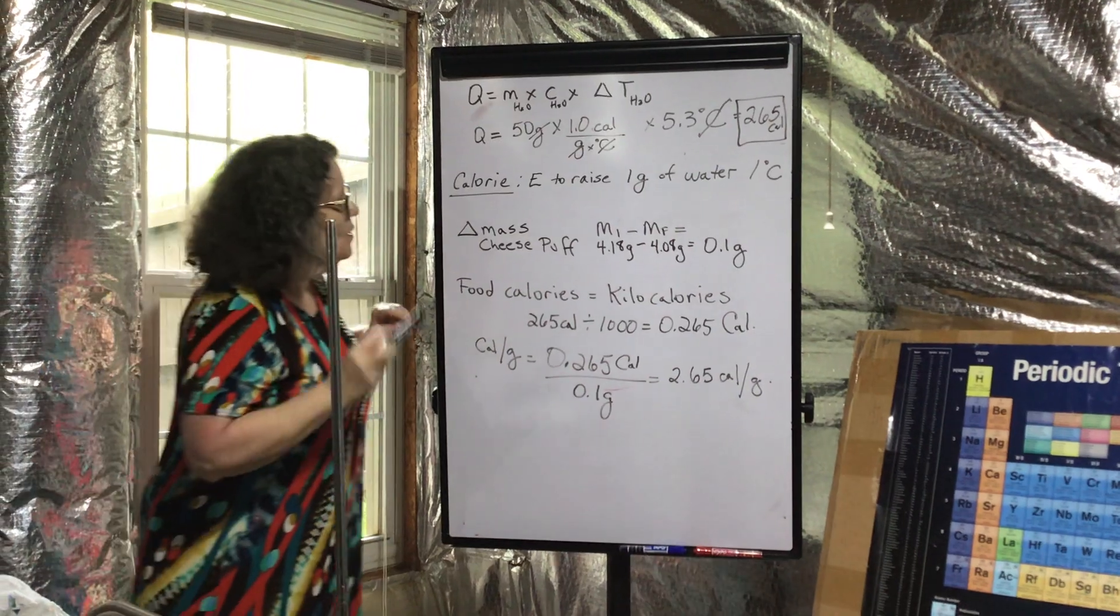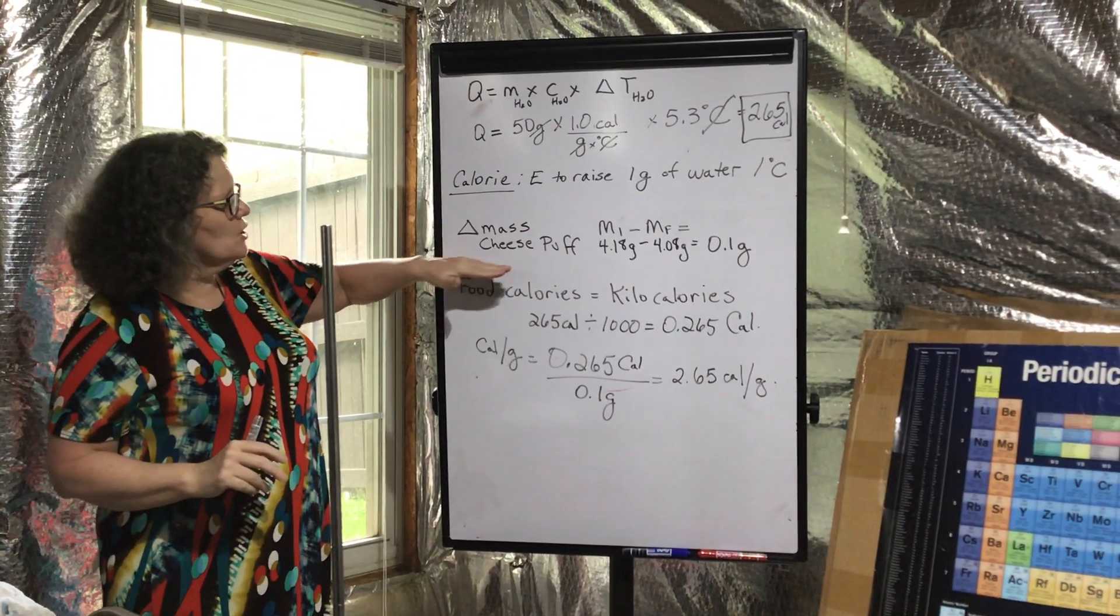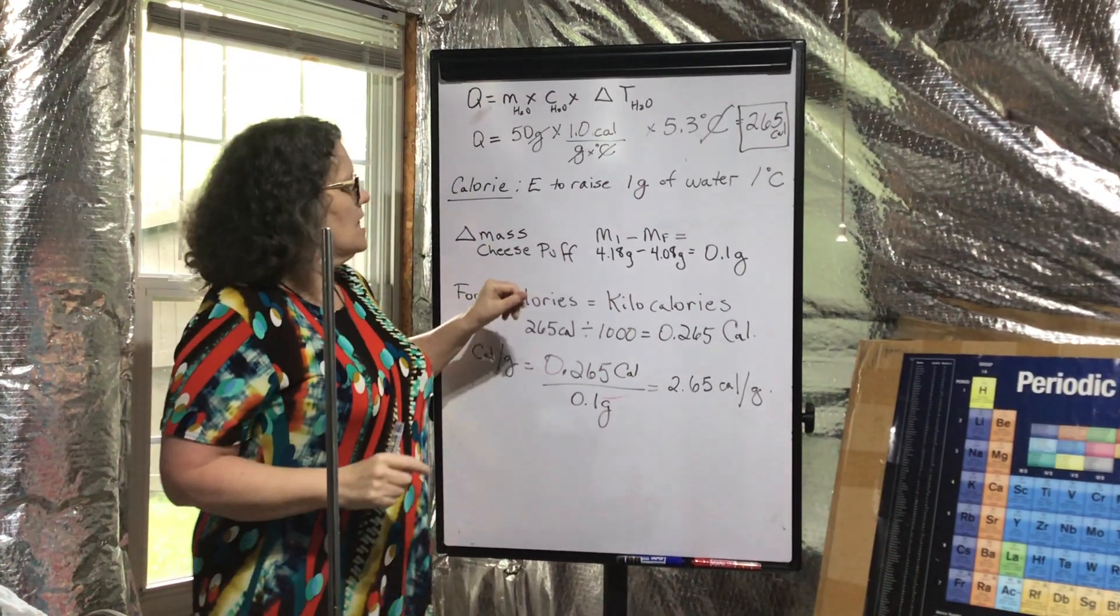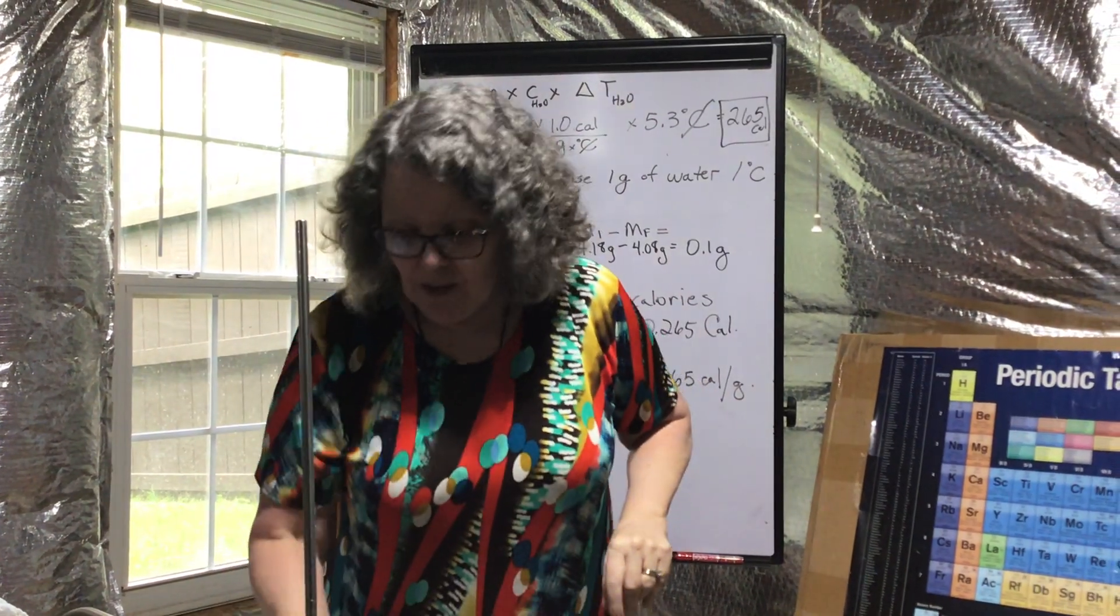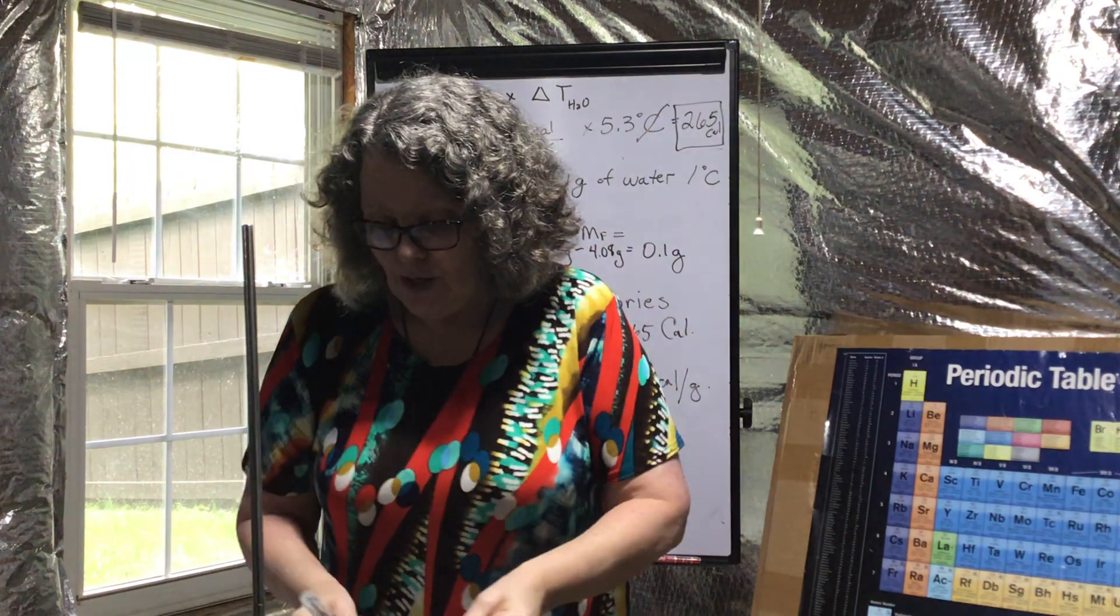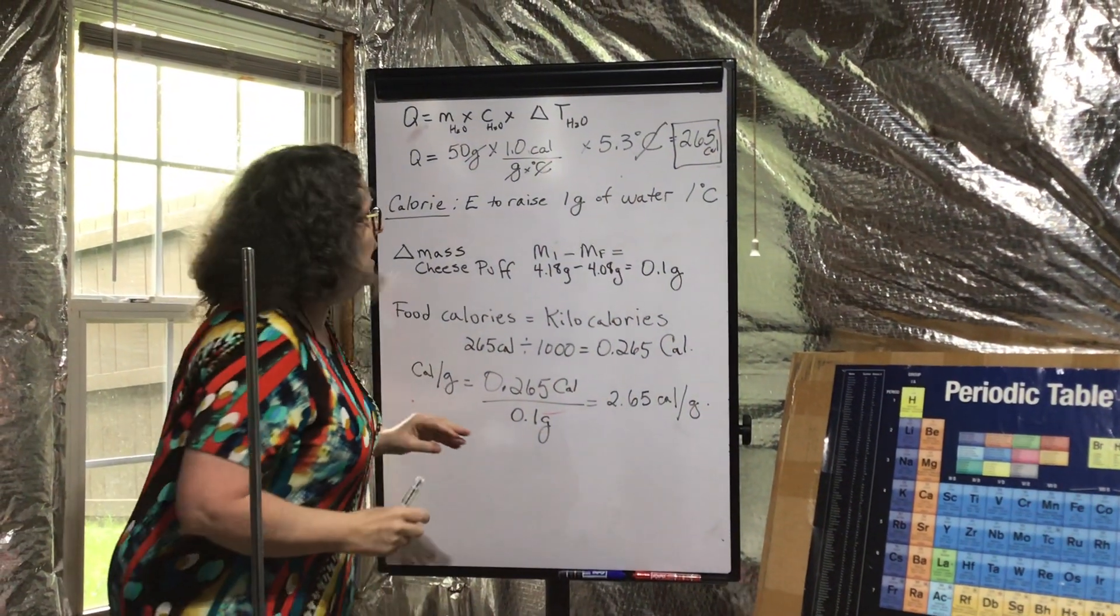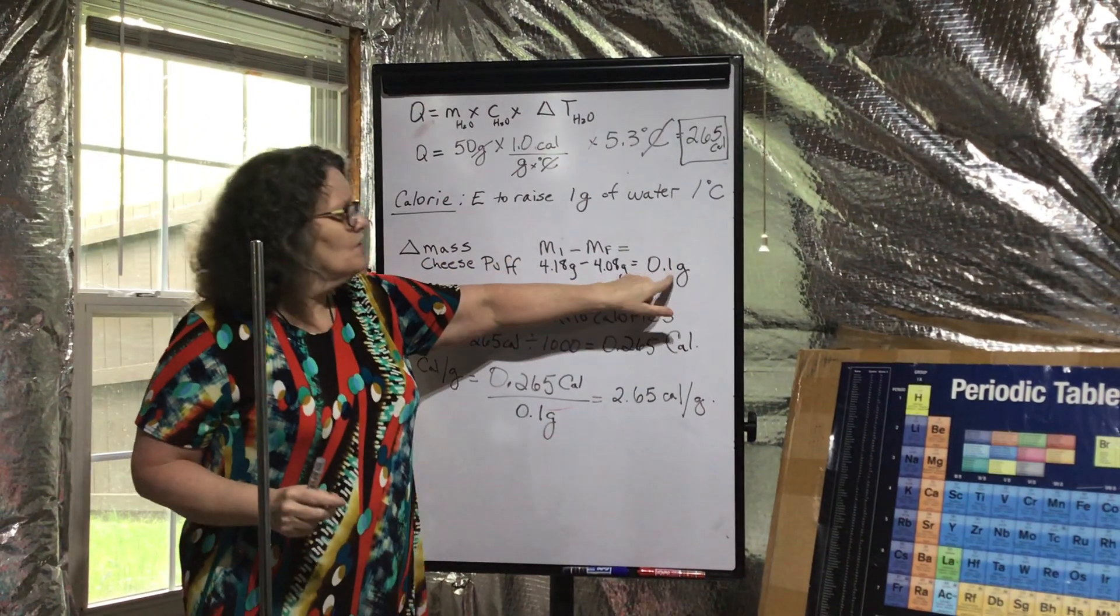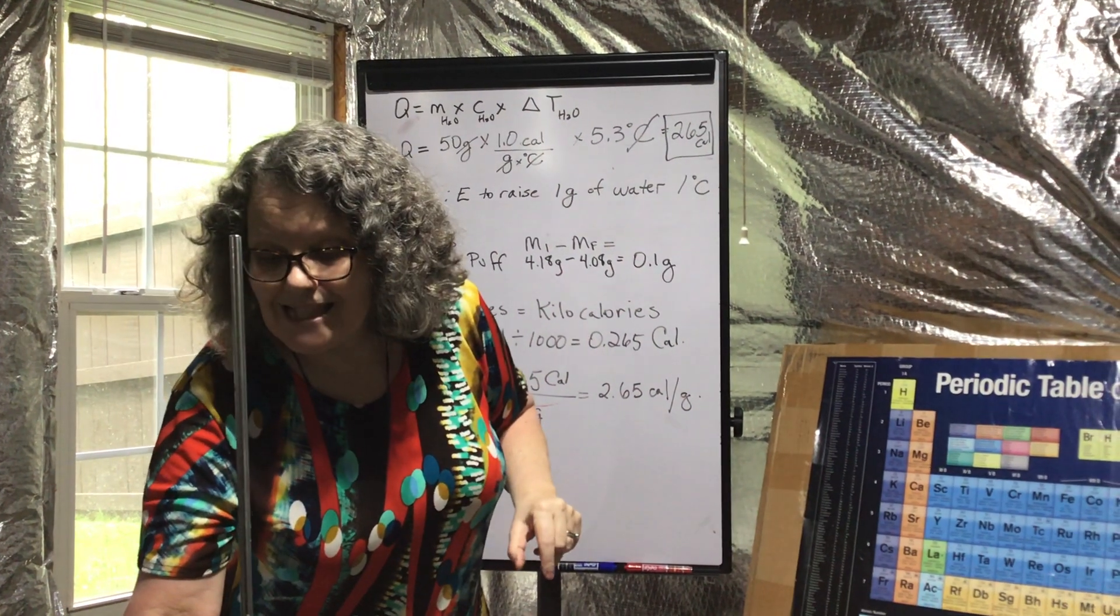First let's look at the mass of the cheese puff. For the sample data they took the cheese puff, they measured - you could do this too - measure the watch glass with the cheese puff before and after, so it's easier to weigh it. The cheese puff itself, the amount that burnt, the amount that burnt that heated the water, was 0.1 grams.